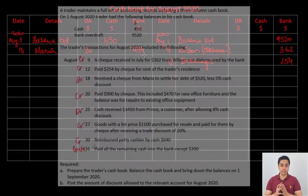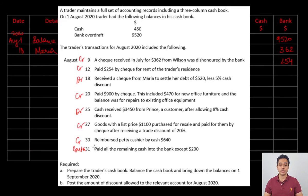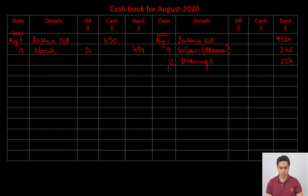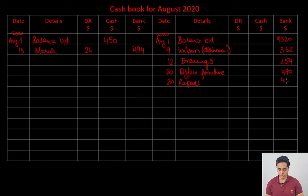August 20: paid a check of 900, with the bifurcation given as 470 for new office furniture and 430 for repairs of office equipment. The first part is capital expenditure and the second is revenue expenditure, so both must be recorded separately. On the credit side: August 20 — office furniture 470 in the bank column, and August 20 — repairs 430 in the bank column.